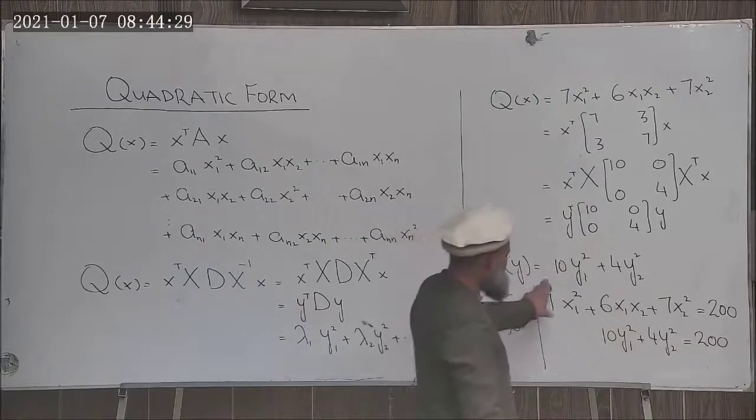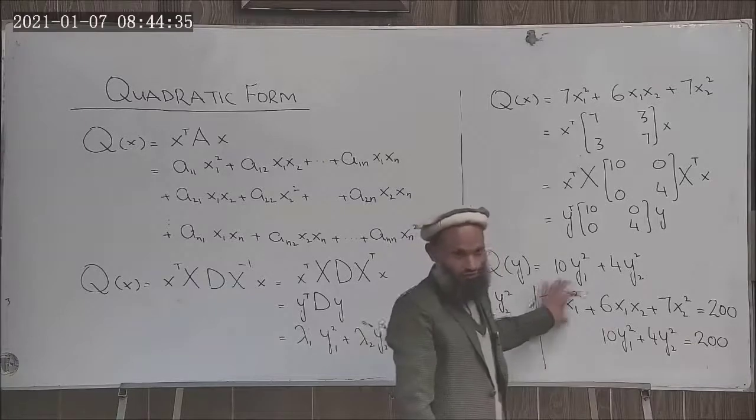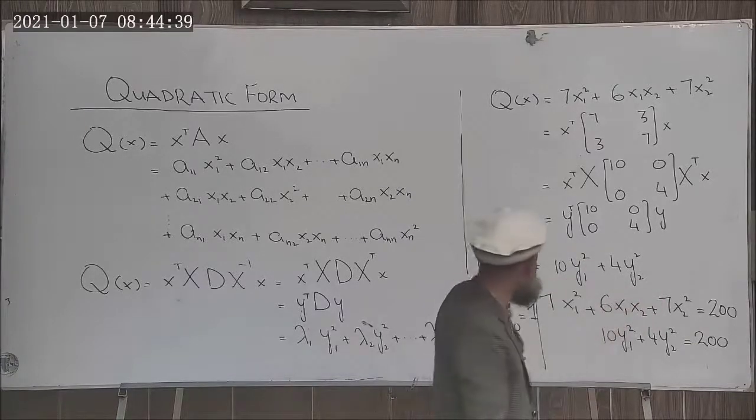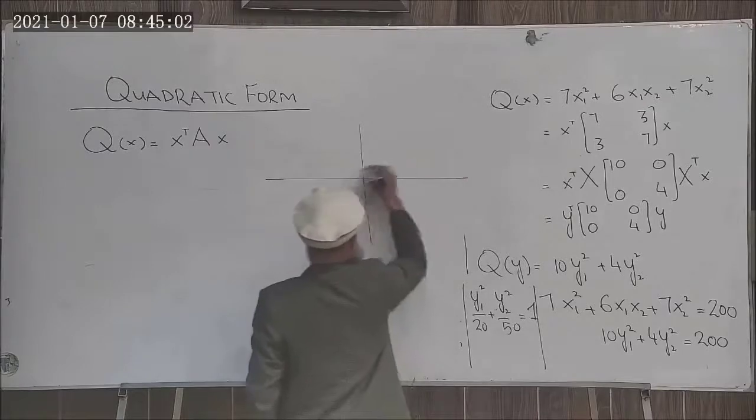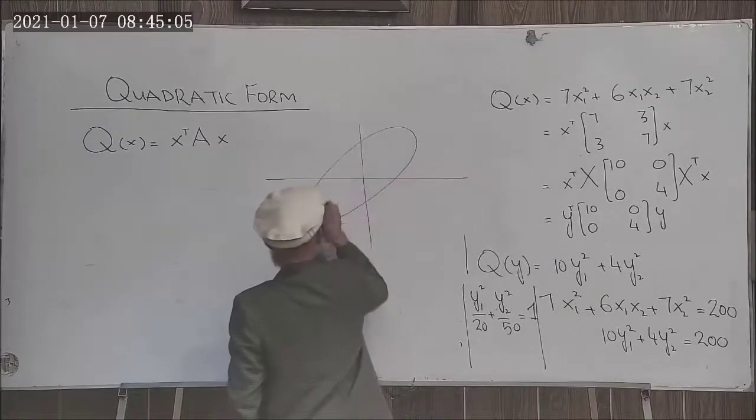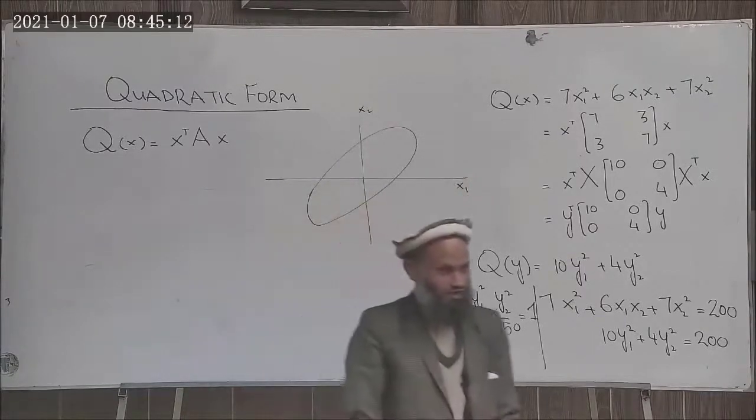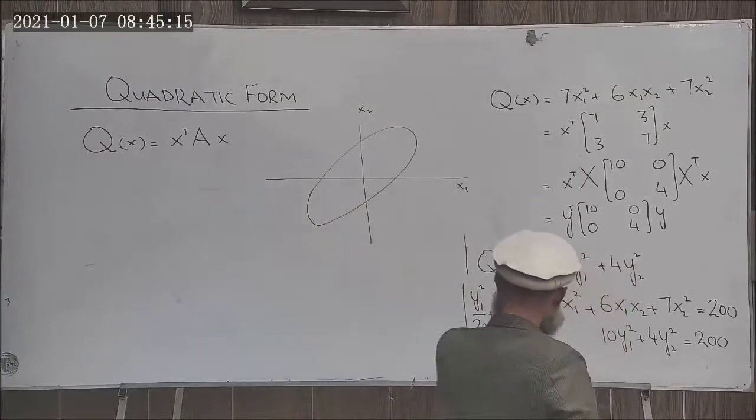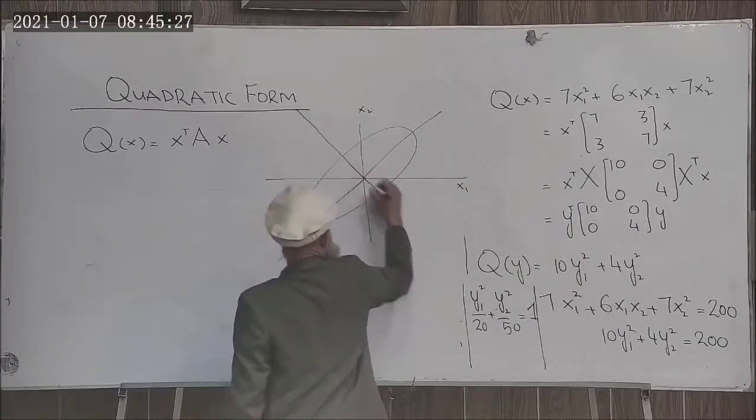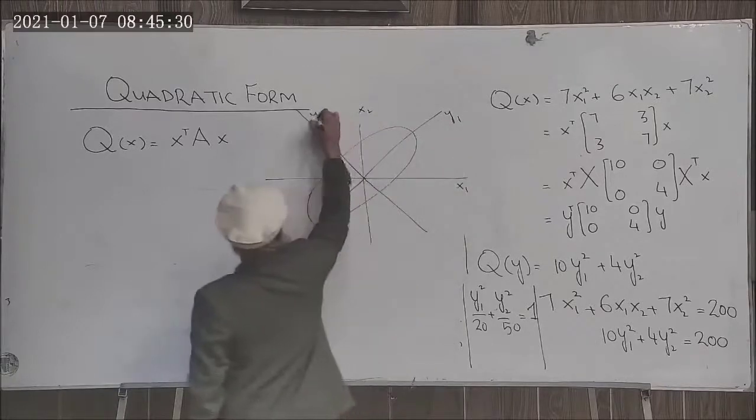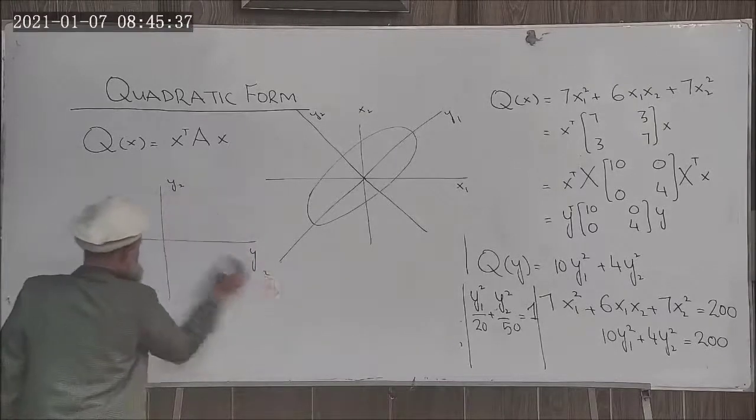So one advantage of this transformation to principal axis is that we are able to see what is the geometrical shape described by this equation. It was not apparent from this quadratic equation. However, we have transformed it into principal axis. Geometrically this has this meaning, for example ellipse. In the original variables x1 and x2, we had this equation which was not visible. We have defined new variables, these variables, let's say y1 and y2, and in these variables y1 and y2, this becomes this shape.